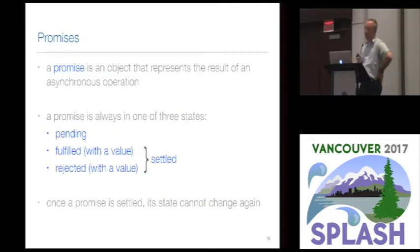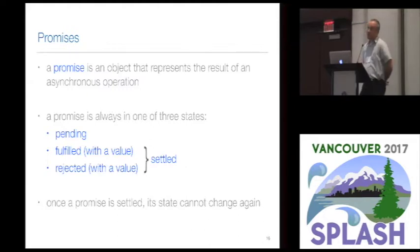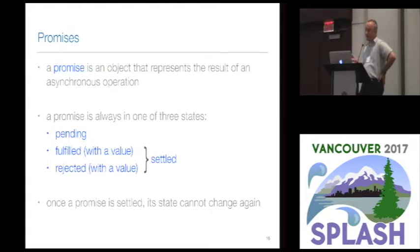Promises are an old concept — I think the earliest paper I could find is by Friedman and Weiss from 1976. A promise is basically an object that represents the result of a future asynchronous computation; sometimes these are referred to as futures. A promise is always in one of three states: it's either pending, which is when it's created; or it's fulfilled, which always happens with a specific value; or it is rejected, also with a specific value. If a promise is either fulfilled or rejected, we refer to that as being settled. And once a promise is settled, it can never change state again — it's a one-time switch from pending to settled.